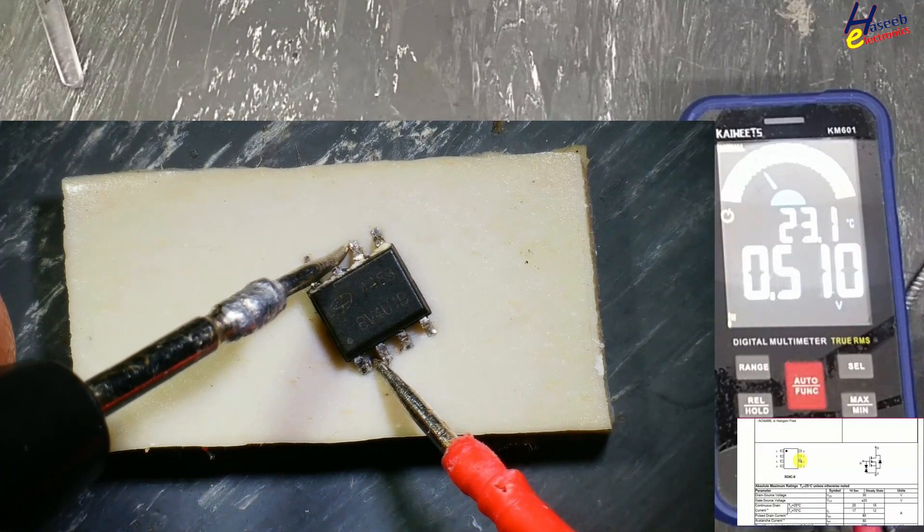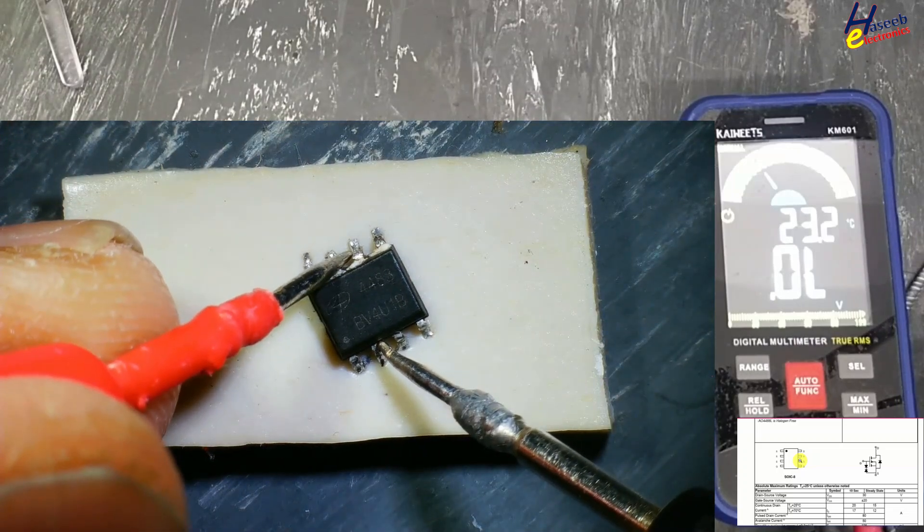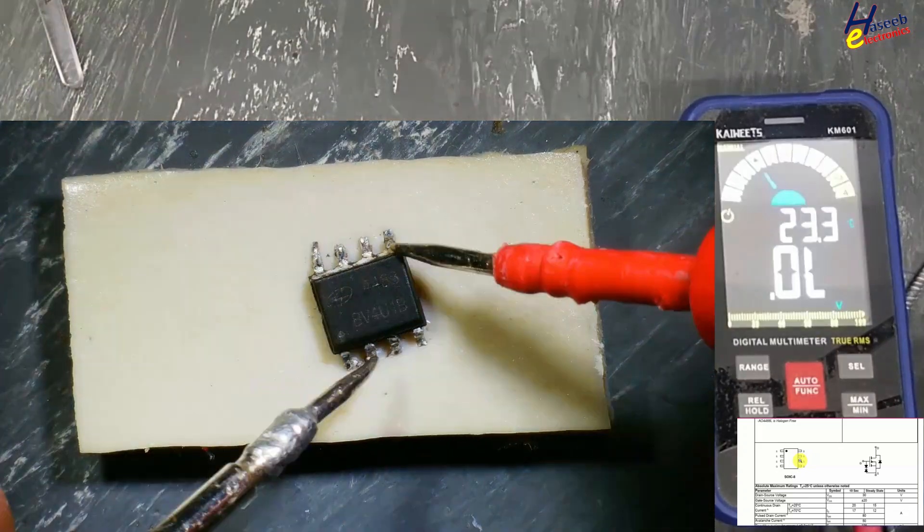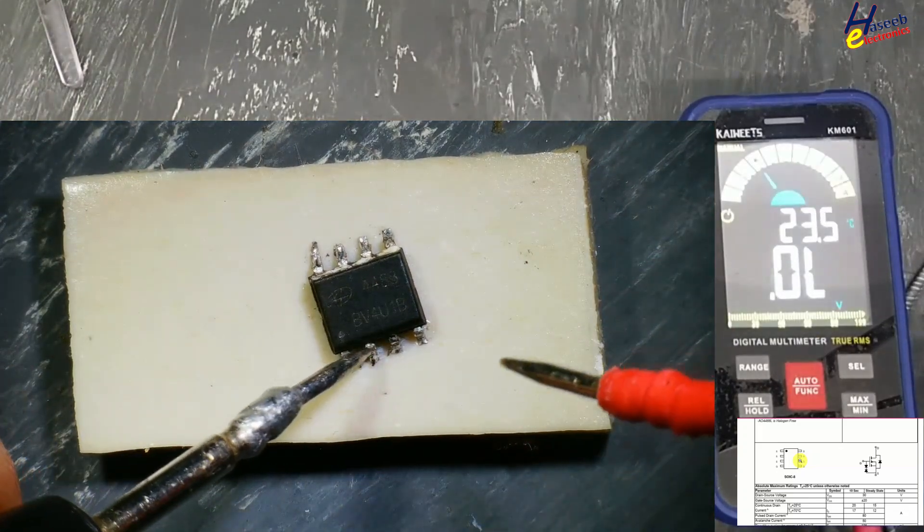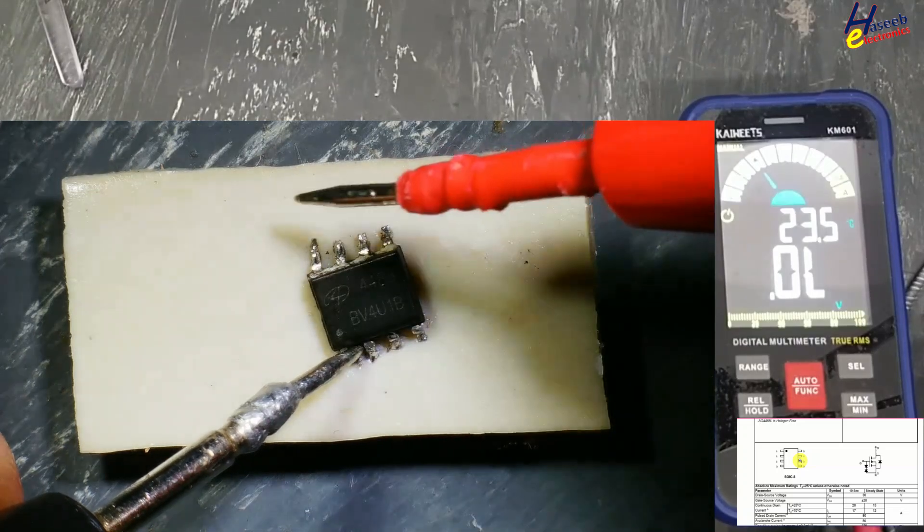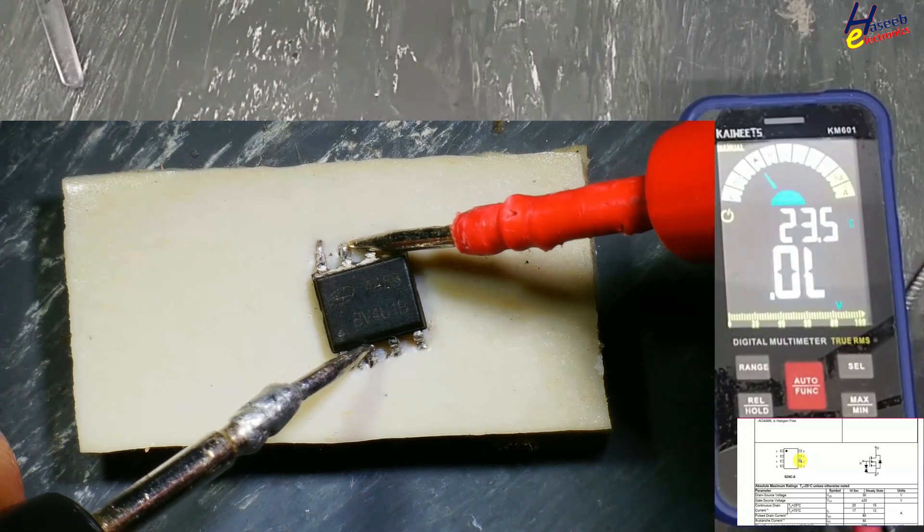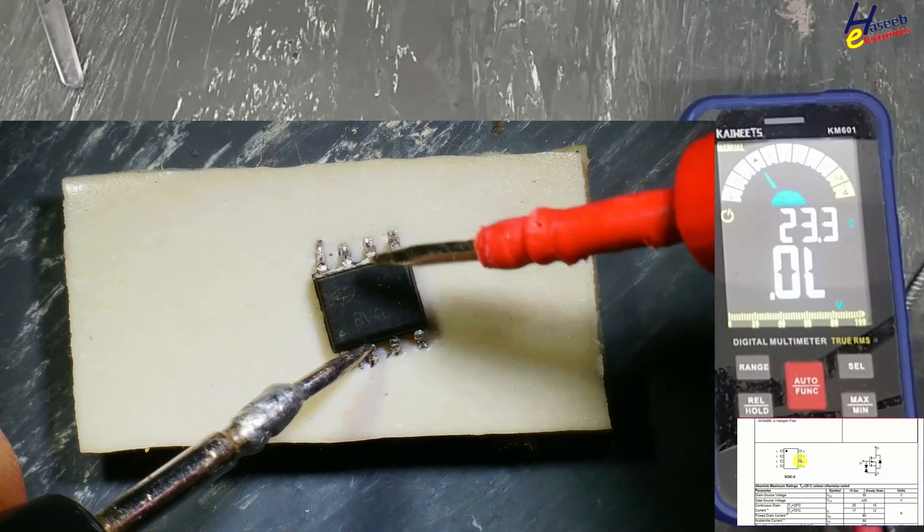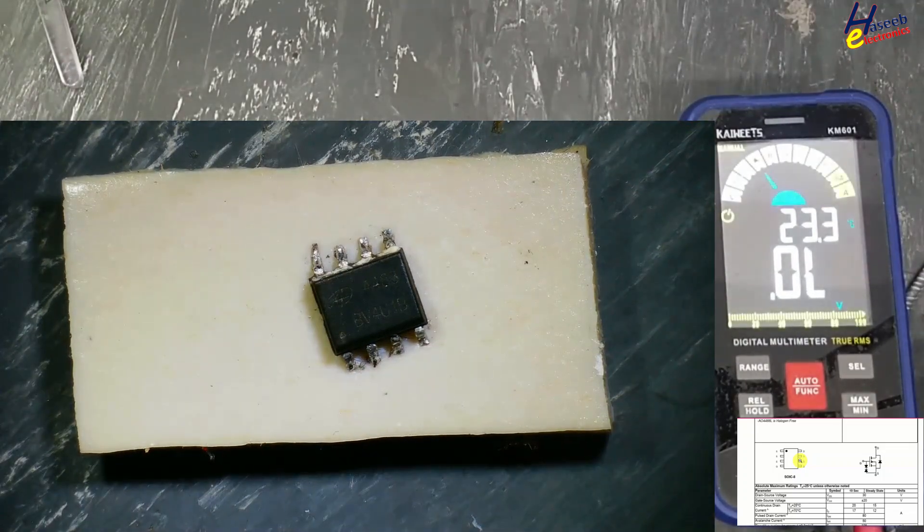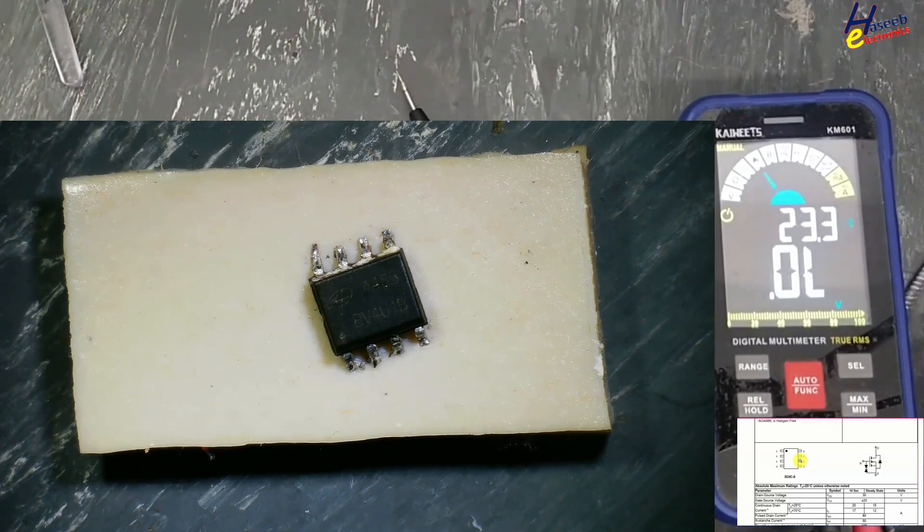Yes, here is diode. Reverse the leads, open circuit, that means the channel is good. Black lead at source pin, red lead to gate. Now check between source and drain. It is not turning on because it is ESD protected. It needs a continuous signal to turn it on.